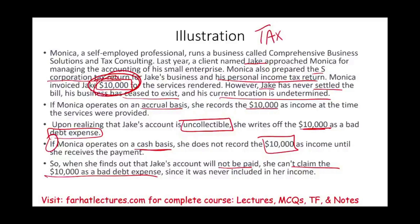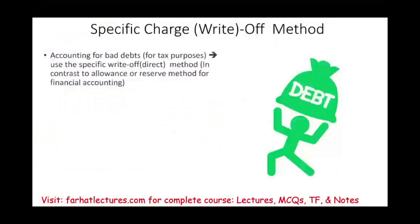In financial accounting using accrual, you would use the allowance method. However, for tax purposes you cannot use the allowance method. For tax purposes you must use the specific charge-off, also called the specific write-off or direct write-off method. This is what we'll be discussing — accounting for bad debt for tax purposes uses the specific write-off or direct write-off method, in contrast to the allowance or reserve method used in financial accounting.